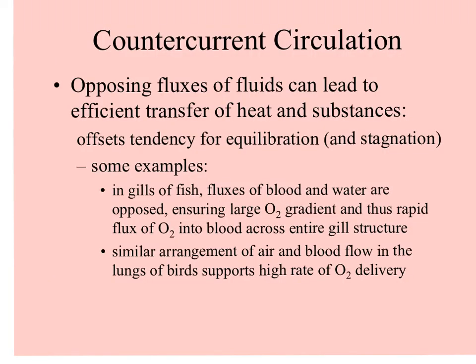One method animals — endotherms — use to conserve heat is countercurrent circulation, where there are opposing fluxes of fluids that can transfer heat. For example, in the gills of fish, blood and water are opposed so that there's a large oxygen gradient and a rapid flux of oxygen into the blood across the entire structure of the gill.